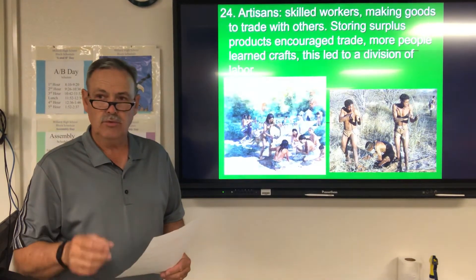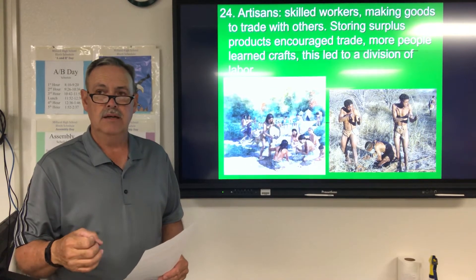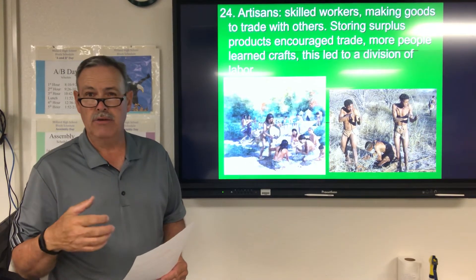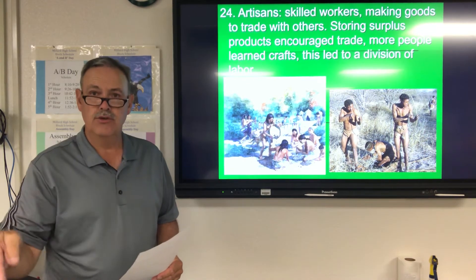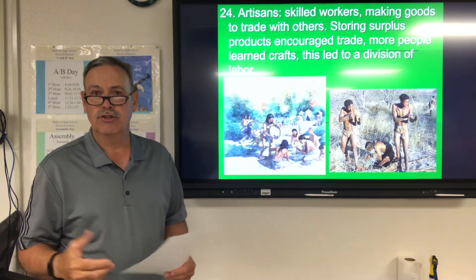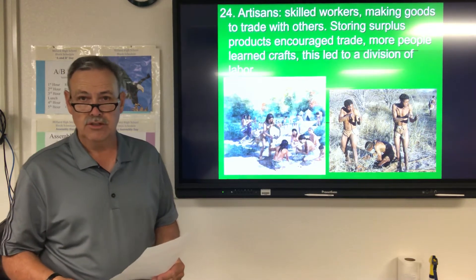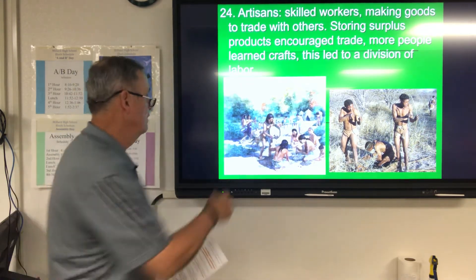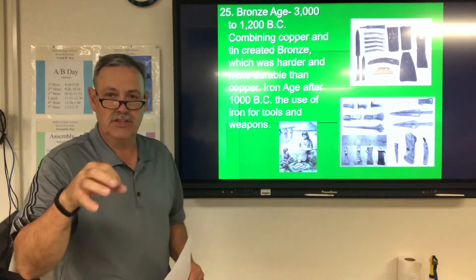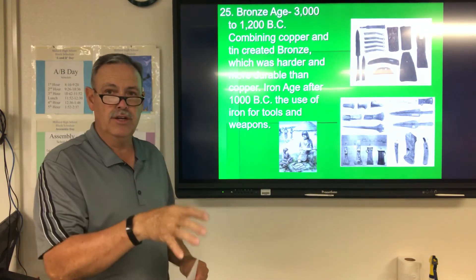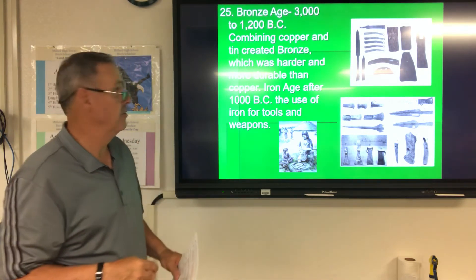This reminds me of today. In our society in America, when I was in high school it was about four people out of every hundred that were needed in agriculture to produce enough food. Today I think it's down to two. Division of labor means each person has a specialty — they would be very good at making pottery or baskets, for example.